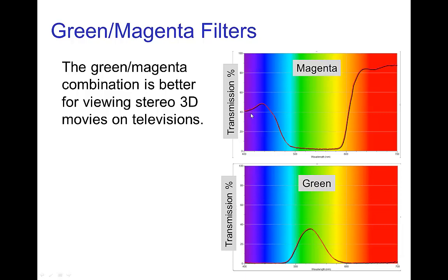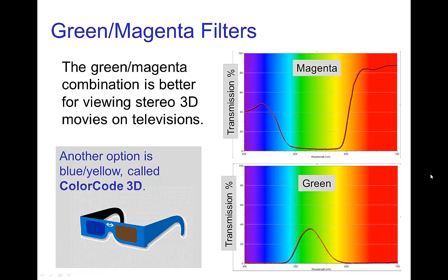Another combination used is green-magenta. For many displays like televisions, due to the spectrum of individual LEDs, this tends to give a better stereoscopic result. The magenta filter transmits everything except green, and the green filter transmits primarily in the green part of the spectrum. Finally, there is also a blue-yellow option, which are also additive complements, though it is less commonly used since our vision in the blue part of the spectrum is not as strong as in other parts.